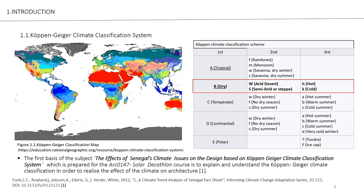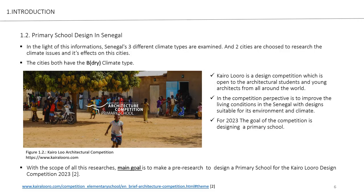This is our first step to explain and understand the Köppen climate classification and to realize its effect on climate and architecture. We chose the B dry climate type from the Köppen climate classification scheme. In the right-hand side you can see the scheme. In light of this information, we plan to attend an architectural design competition called the Cairo-Laura design competition, which is open to all architecture students and young architects from around the world. The competition's goal is to improve living conditions in Senegal with design strategies suitable for its climate and environment. Our main point is to conduct a pre-research for this competition.